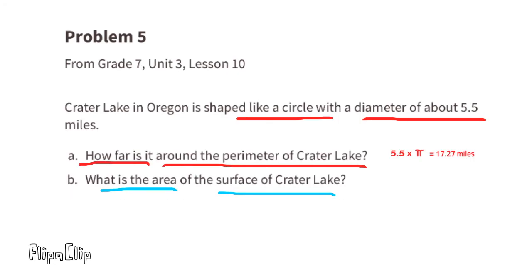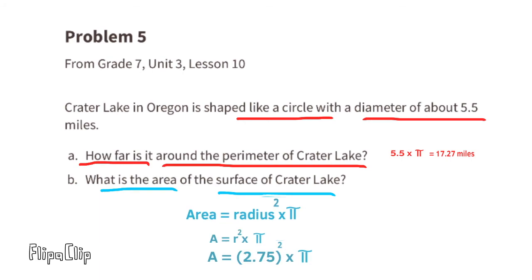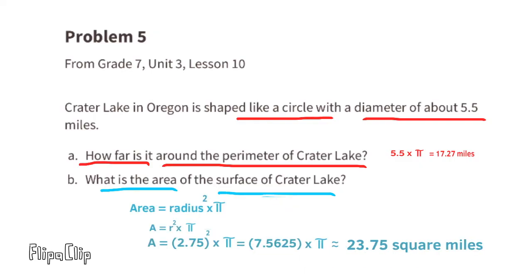Part b — what is the area of the surface of Crater Lake? The area of a circle is radius squared times pi. The radius is half the diameter: 5.5 divided by 2 is 2.75. So the area is 2.75 times 2.75 times pi, or 7.5625 times pi, which is approximately 23.75 square miles.